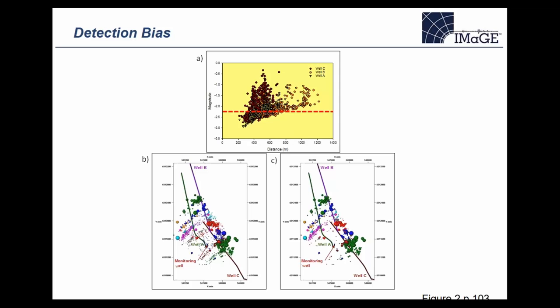Detection bias is simply the sensitivity of the recording. An important QC tool is a plot of microseismic event magnitude against distance — focusing on downhole examples, though all these biases are equally important for surface or buried-grid monitoring. The detection bias for downhole is readily apparent from the magnitude-distance plot: the smallest magnitude being detected obviously gets larger as we get further from the monitoring array.